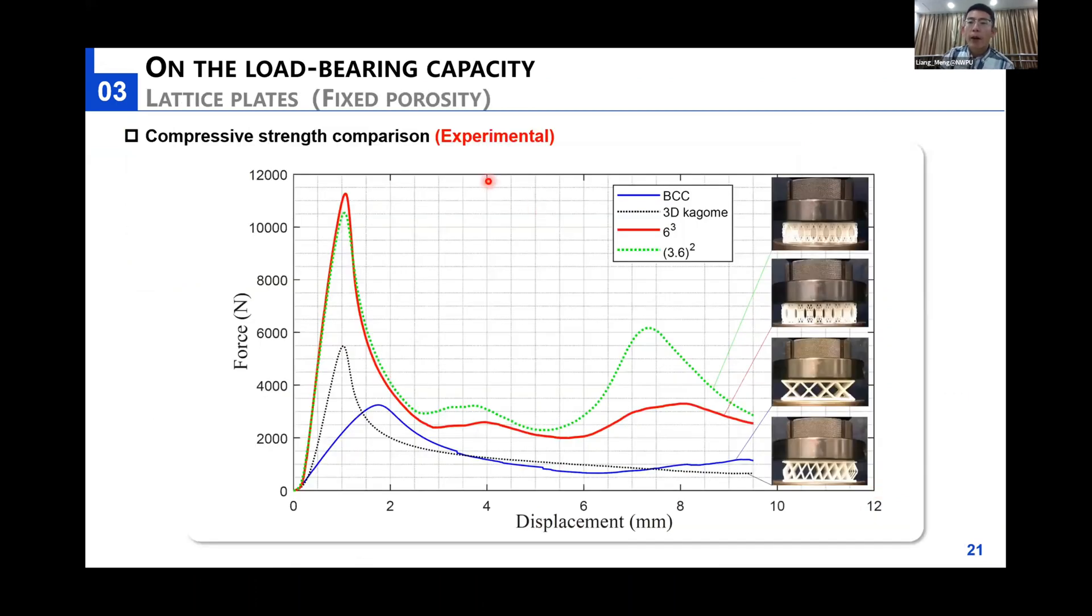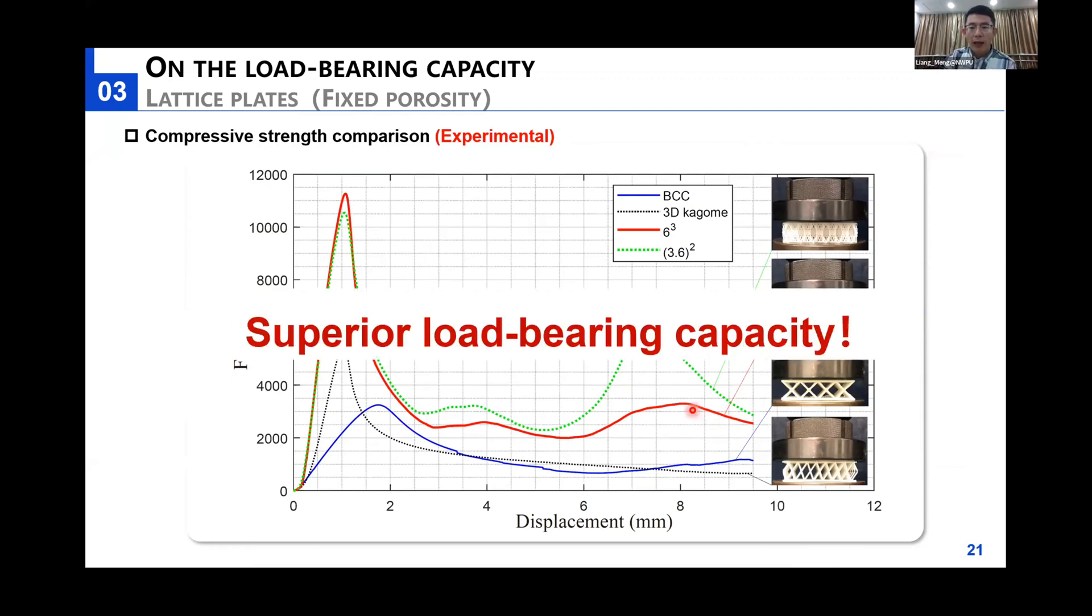Furthermore, we have also compared the load-bearing capacity of the hyperbolic lattice structures with their counterparts, such as BCC and 3D Kagome lattice. We ensure that the same amount of material have been used, such that their performance is only influenced by the respective topologies. The hyperbolic lattice, the upper two indicated by the green and red line here, seems to be far superior to the other two counterparts under compression.